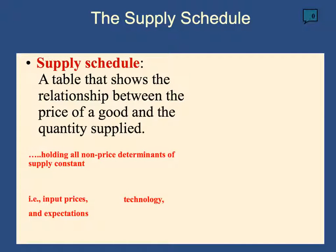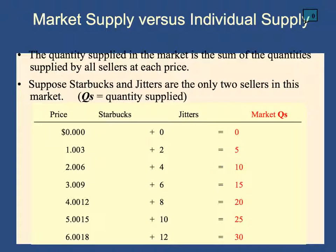Just as there is a demand schedule, there's also a supply schedule, which is just a table that shows the relationship between the price of a good and the quantity supplied, holding all non-price determinants of supply constant. It works exactly the same way as demand, except here it's not individuals — it's going to be firms. They're going to tell you how much they're willing to supply. For example, one firm is willing to supply three lattes at $1, and another firm is willing to supply two lattes at $1. When you add both together, assuming the market is made of only two sellers, the market's willingness to supply at $1 is five units. We can then see the different units the market is willing to supply at different prices.